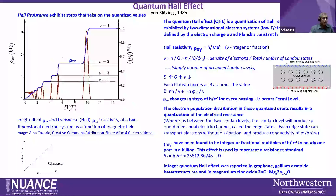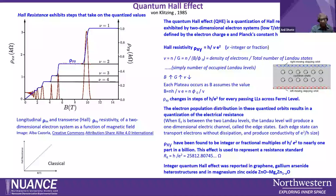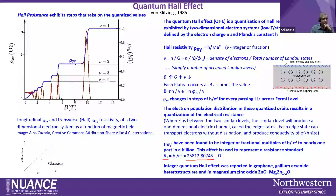When the Fermi energy EF is between the Landau levels, it produces a one-dimensional electrical channel. The resistance is given by h over νe², and this is accurate to one part in a billion. Because of this accuracy, it is used as a resistance standard, and that value is called the von Klitzing constant. This quantum Hall effect has been reported in graphene, gallium arsenide heterostructures, zinc oxides, and magnesium zinc oxides.